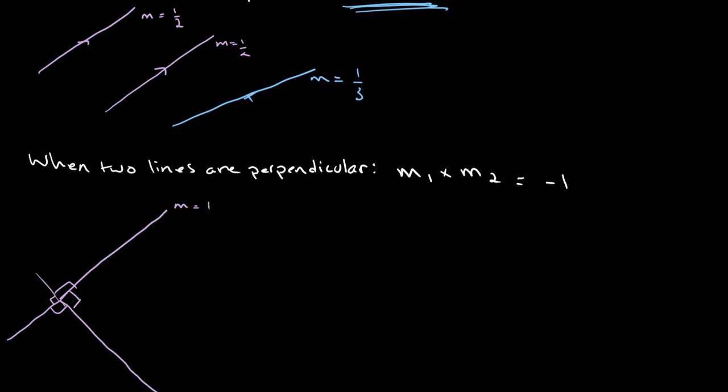And once again, we can plug this into our equation to see. Let's say this is m1 and this is m2. Then m1 times m2 is equal to 1 times negative 1, which is equal to negative 1. Therefore, we can confirm that our lines are perpendicular.